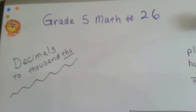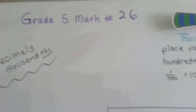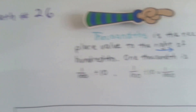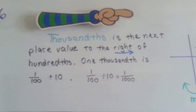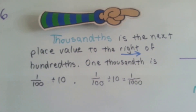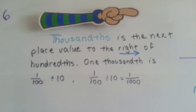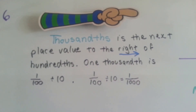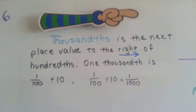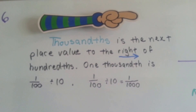Grade 5 math, number 26: decimals to thousandths. Thousandths is the next place value to the right of hundredths. One thousandth is one hundredth divided by ten — one hundredth divided by ten equals one thousandth.